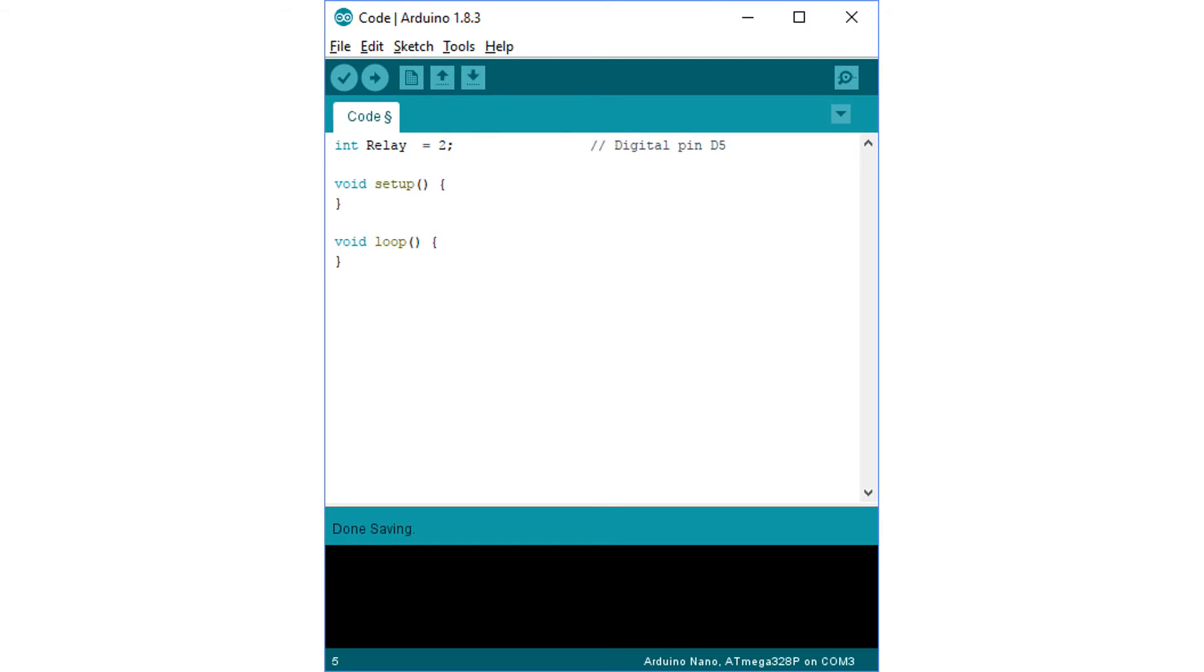The code is very simple. Just start by defining the digital pin number 2 of the Arduino as the relay pin. Then define the pin mode as output in the setup section of the code. Finally, in the loop section we are going to turn on and off the relay after every 500 CPU cycles by setting the relay pin to high or low respectively.